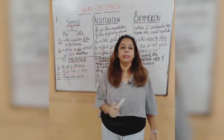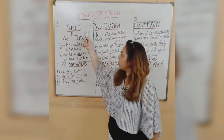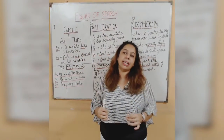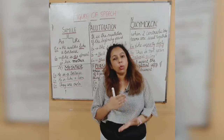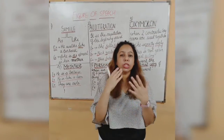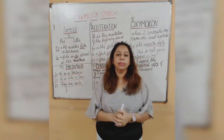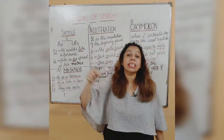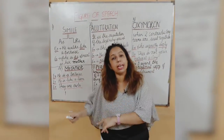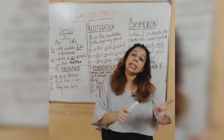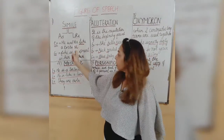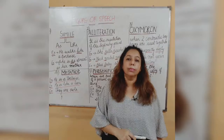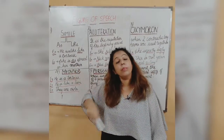First, we will take simile. Simile is a figure of speech. Keep this tip in mind: if in any sentence the two words 'as' or 'like' appear, and a figure of speech is asked, then the figure of speech is simile. For example: 'He walks like a tortoise' — here he is compared to a tortoise using 'like'. Next example: 'She is as smart as her mother' — she is as smart as her mom.